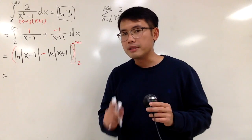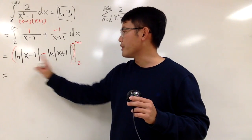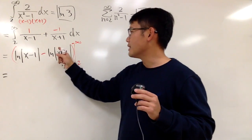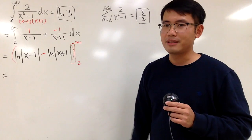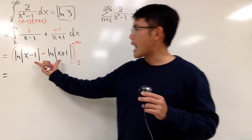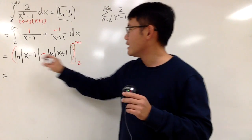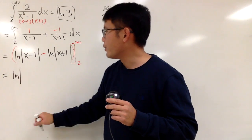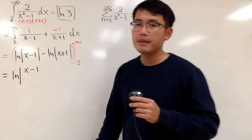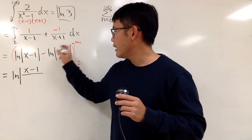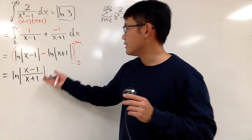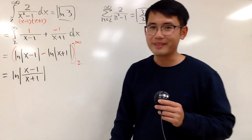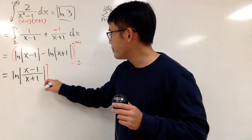The trouble here is that if you plug infinity into each log separately, you get ln(∞ - 1) which is infinity, minus ln(∞), which doesn't quite make sense. You have to actually combine them first. This is the same as natural log of the absolute value of (x - 1) over (x + 1), because when you subtract two natural logs you can put them together as a quotient.